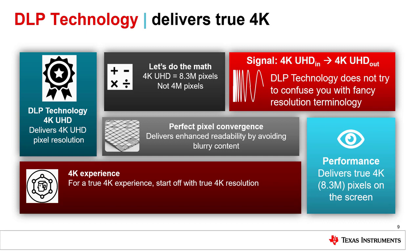Therefore, you're only getting half 4K UHD pixel resolution. You may see many different types of 4K names — be careful with the product you choose. Rest assured that DLP technology delivers 4K UHD, that's 8.3 million pixels, onto the screen. The projector shootout images tell the story. DLP technology is the only choice for high resolution. If you're looking for a true 4K UHD experience, DLP technology should be your primary projector choice.